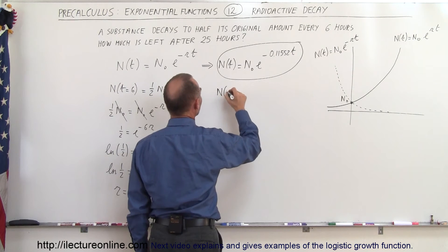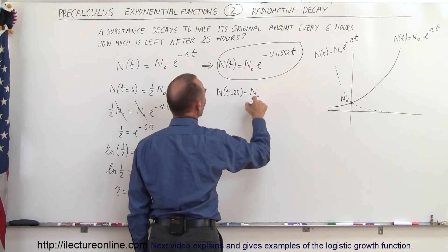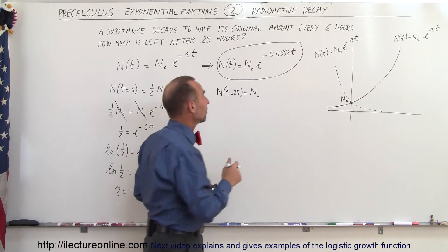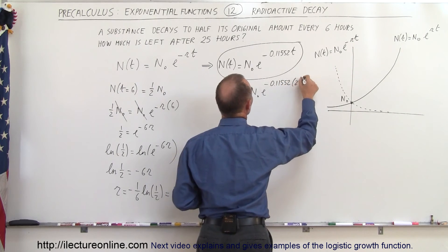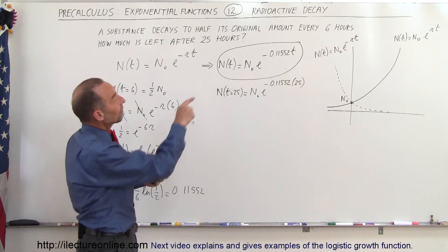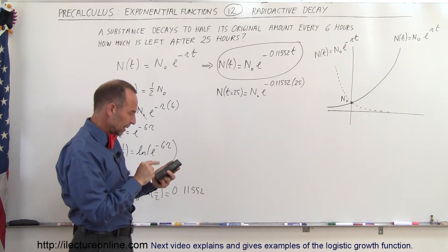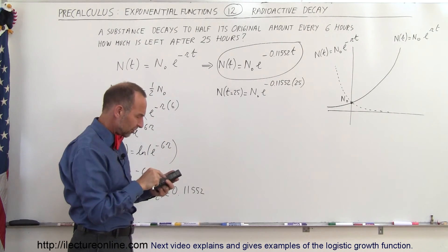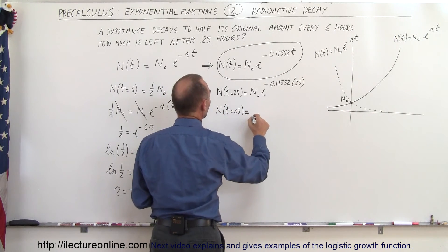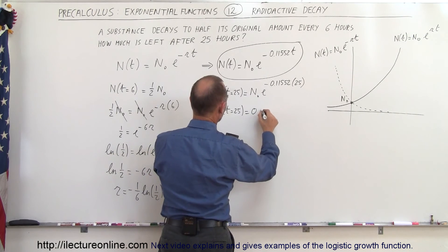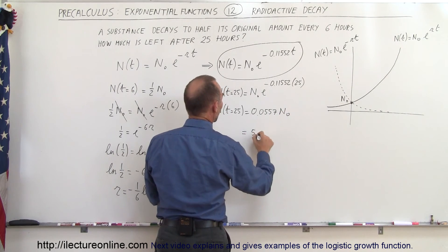Plugging in t equals 25: the amount left when t equals 25 is N₀ times e to the minus 0.115525 times 25. Using the precise stored value for r, multiplying by 25, keeping it negative, then computing e to the x, we get that the amount left after 25 hours equals 0.0557 times N₀.